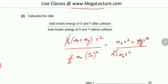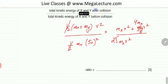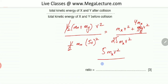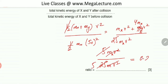Substituting MY = 4MX into the numerator gives MX·V² + 4MX·V² = 5MX·V². The denominator is 25MX·V². All MX and V² terms cancel, giving 5/25 = 1/5 = 0.2. That is the ratio of kinetic energies after to before collision.